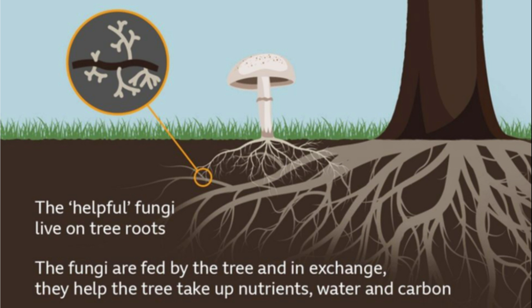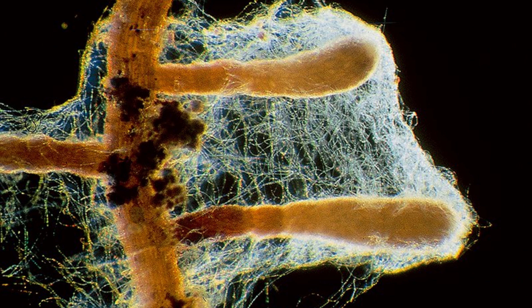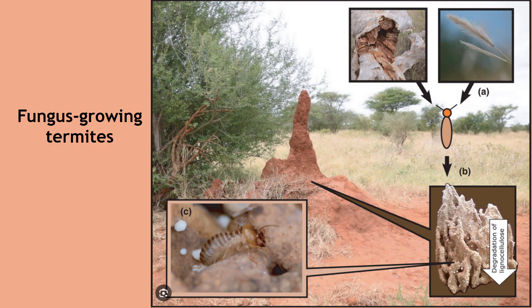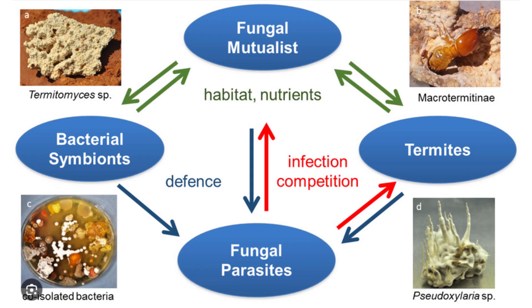The algae or plants make organic molecules by photosynthesis and supply them to the fungi in the form of sugars or lipids, while the fungi supply the plant with water and mineral nutrients. Symbiosis between animals and fungi has been found in ants, termites, ambrosia beetles, duendes, and marsh periwinkles. In this video we will look at the mutualistic relationships between leafcutter ants and fungi, and between duendes and mushrooms.